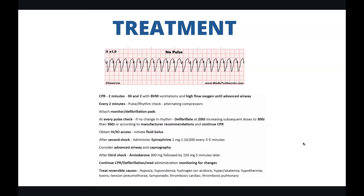After the third shock, we can do amiodarone 300 milligrams followed by 150 milligrams five minutes later. Continue this cycle of CPR, defibrillation, and med administration while monitoring for changes. Treat reversible causes as they arise: hypoxia, hypovolemia, acidosis, hydrogen ion acidosis, hyper or hypokalemia, hypothermia, toxins, tension pneumothorax, cardiac tamponade, thrombosis — both cardiac and pulmonary.